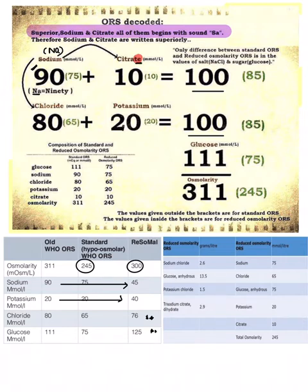Citrate ends with TE - that is 10. 90 plus 10 makes 100. Coming to chloride - chloride is 8-letter, that is 80. This also should make 100, so potassium will be 20. This makes it 200 - 100 and 100. If we talk about glucose in the old composition, this is 111. The total osmolarity is 311. This was the old ORS. Now we have a new ORS with osmolarity of 245 - reduced osmolarity ORS.